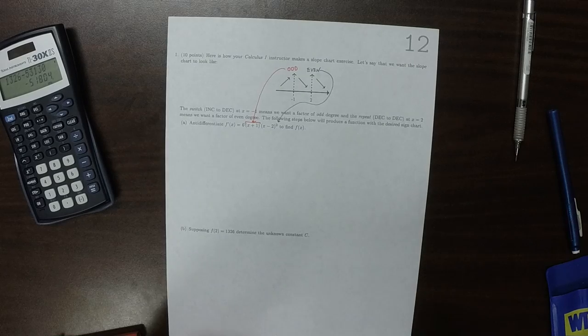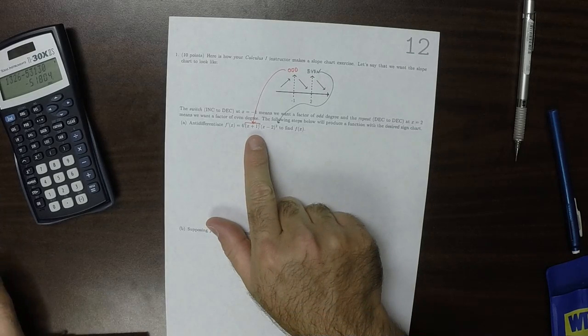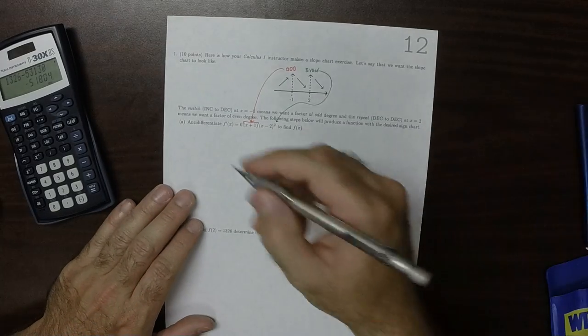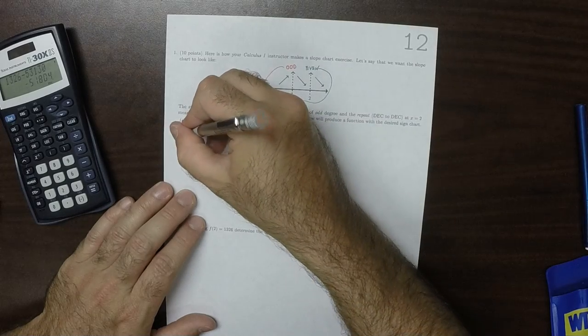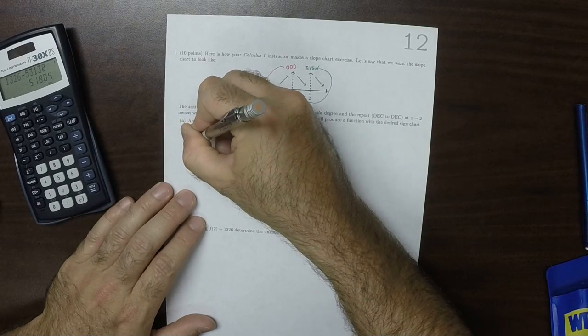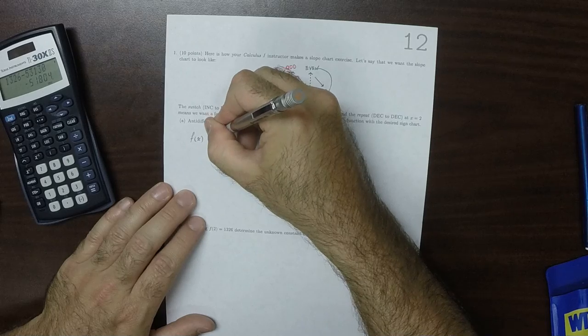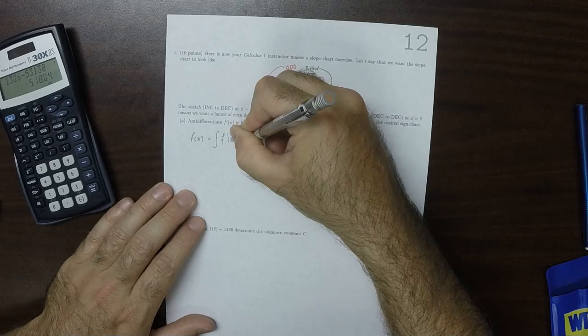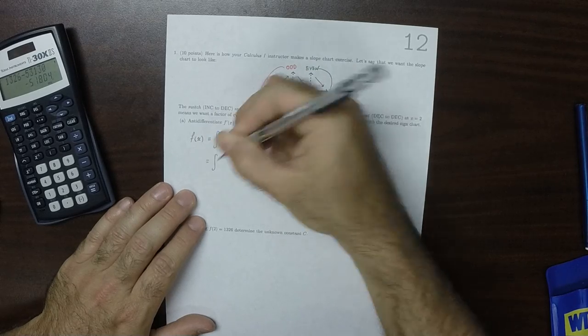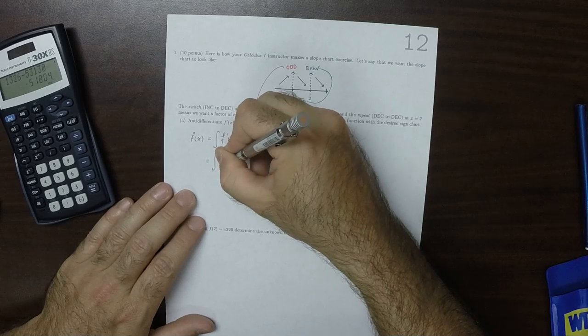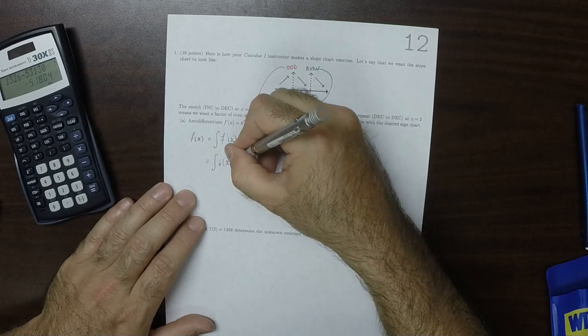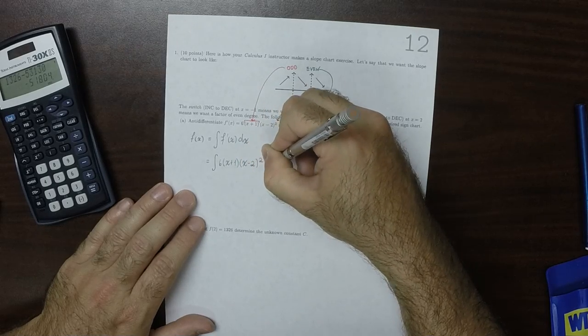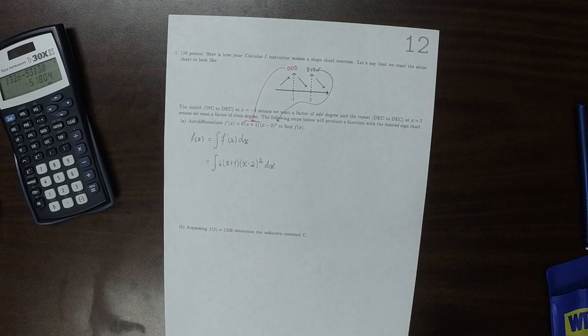So if we anti-differentiate this function, we'll get another function that does that. So we want to anti-differentiate that. So f of x is the anti-derivative of the derivative of f dx. So that is 6, and then x plus 1 multiplied by x minus 2 squared dx. So we want to compute that anti-derivative.